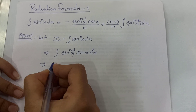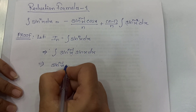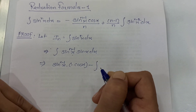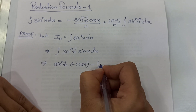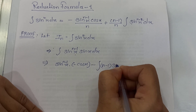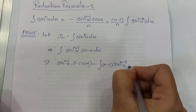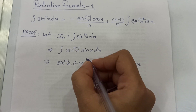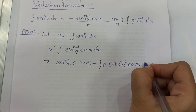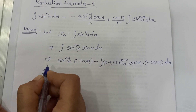By integration by parts, we get sin raised to n minus 1 x as it is; integration of sin x is minus cos x; minus integration of the derivative of the first function. The derivative of sin raised to n minus 1 x is n minus 1 into sin raised to n minus 2 x into cos x. So we have that multiplied by the integration of sin x, which is minus cos x dx.